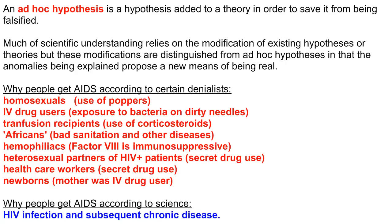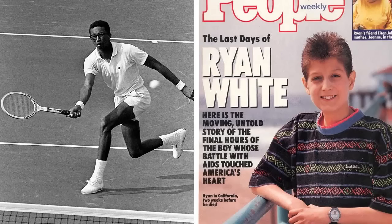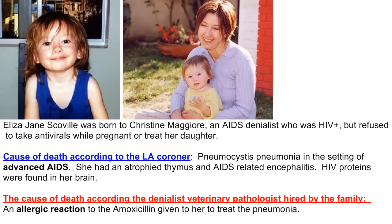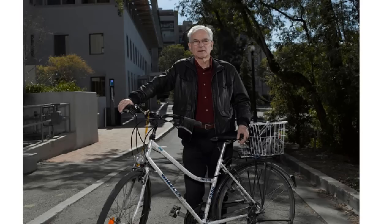For example, many denialists insist that AIDS is caused by chemical immunosuppression, especially by amyl nitrate or poppers. When cases are seen in normal, healthy heterosexuals, they begin to invent explanations: the person was a secret homosexual, or took IV drugs, or was exposed to a chemical and didn't realize it — anything to avoid admitting that their explanation is insufficient to explain the origin of the disease.